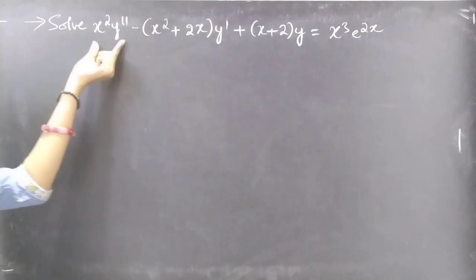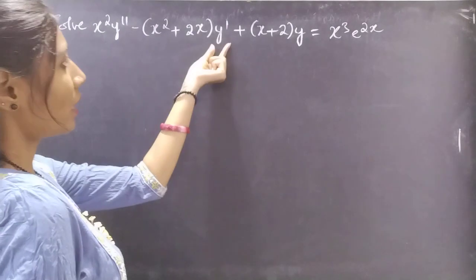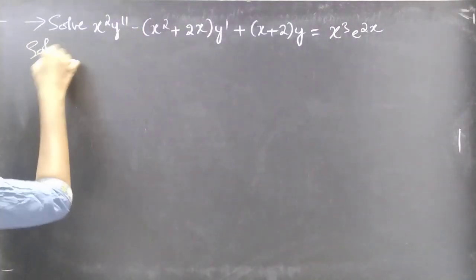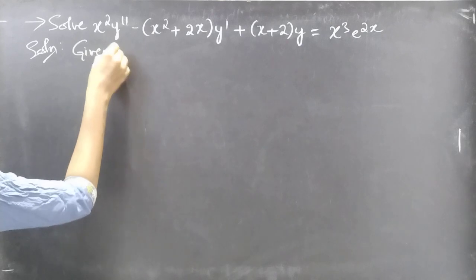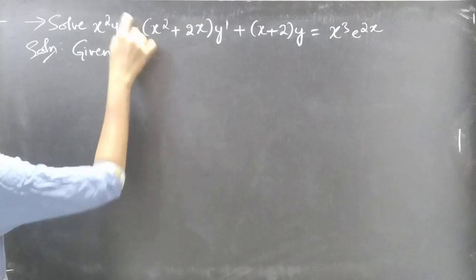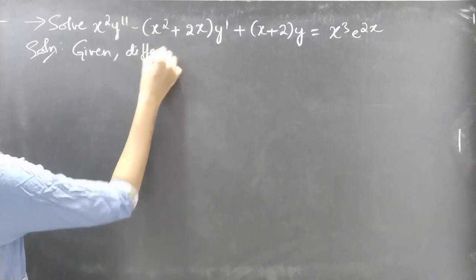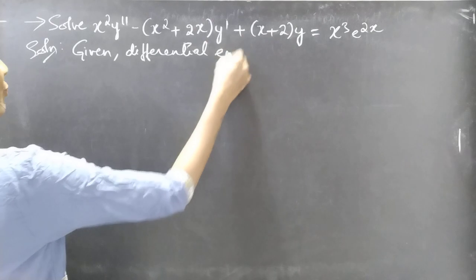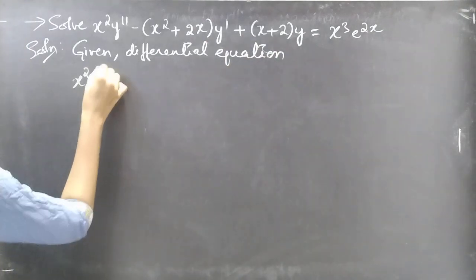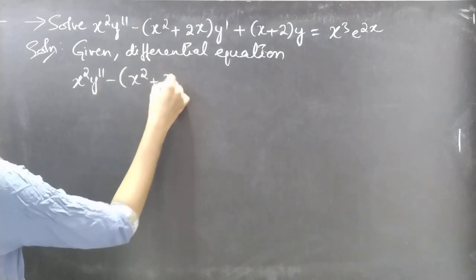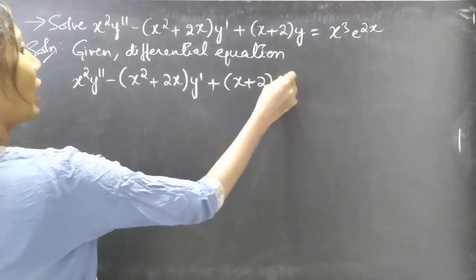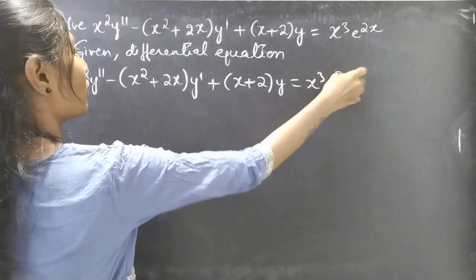Problem. Solve x squared y double dash minus of (x squared plus 2x) into y dash plus (x plus 2) into y equal to x cube e power 2x.